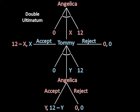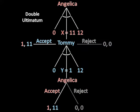If Tommy proposes a counteroffer, Angelica can either accept it or reject it. When we solved this, we found that Tommy gets 11 cookies and Angelica only gets one.